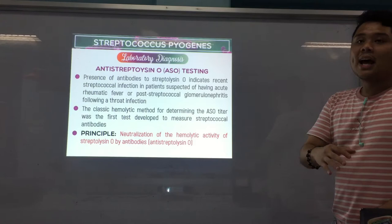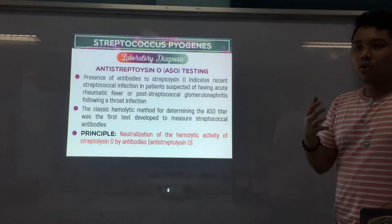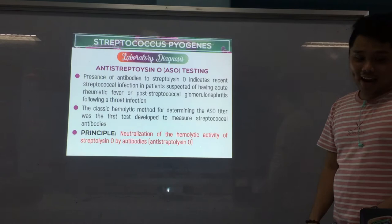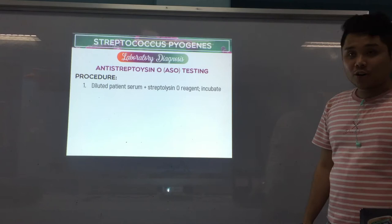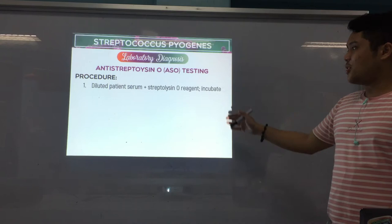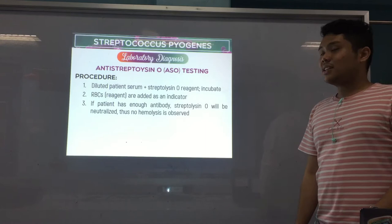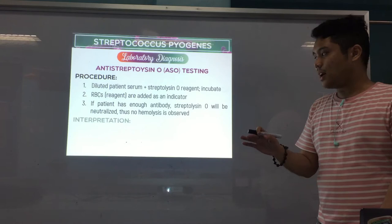The classic hemolytic method for determining the ASO titer uses hemolysis as the endpoint. The principle is neutralization of the hemolytic activity of streptolysin O by the antibody. So the end result we look for is hemolysis — no hemolysis is the positive result, and with hemolysis is negative. Presence of ASO indicates a recent streptococcal infection in patients with rheumatic fever or post-streptococcal glomerulonephritis.